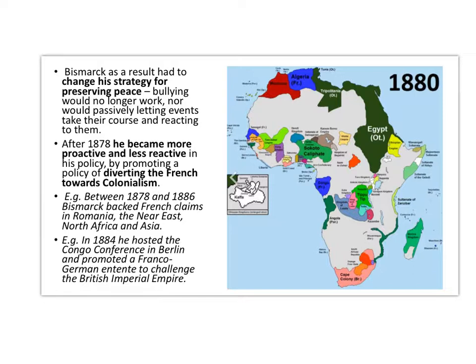The final point: Bismarck after 1875 had to change his strategy for preserving peace. Bullying would no longer work. The basic policy of keeping France isolated never changed, but the aggressive stance to isolate France had failed in 1875. So after 1878 he became more proactive — less reactive. A reactive policy is an opportunist one, watching and waiting to grab opportunities; but Bismarck realized he needed to be more proactive in creating a situation that would isolate France.